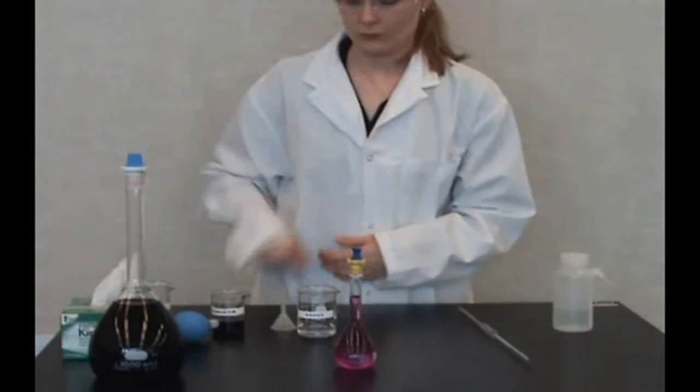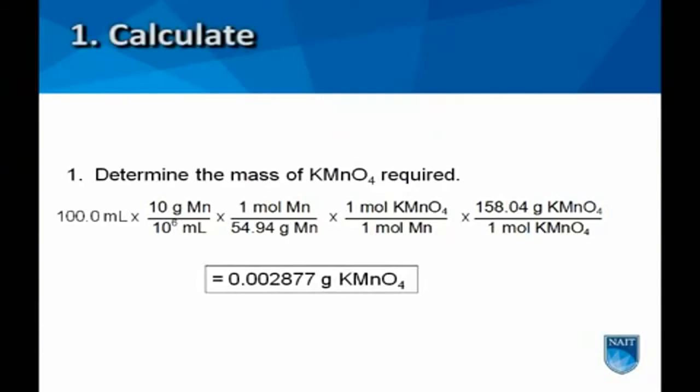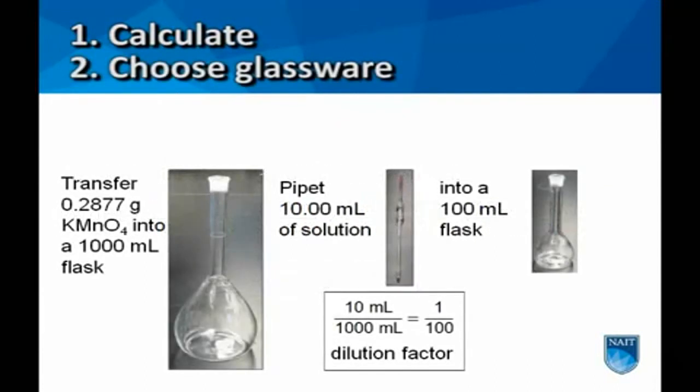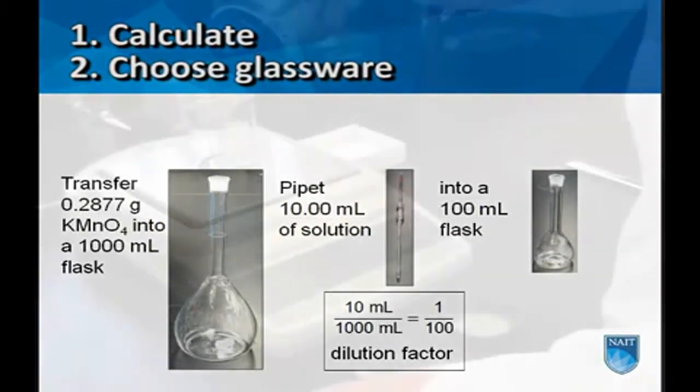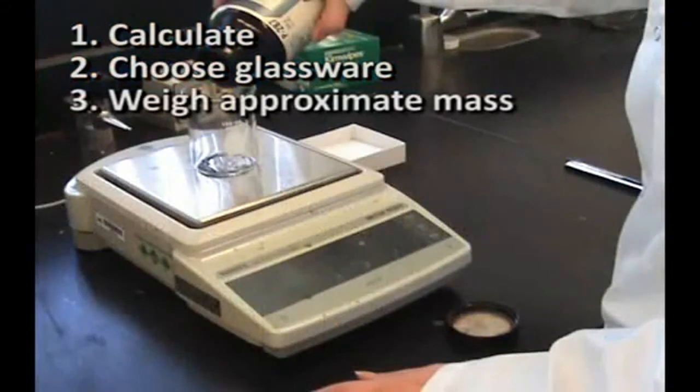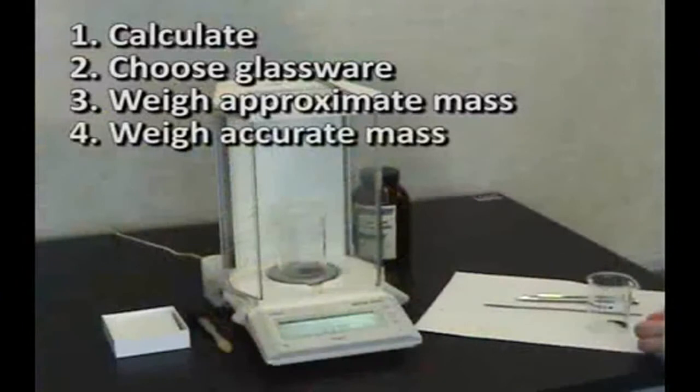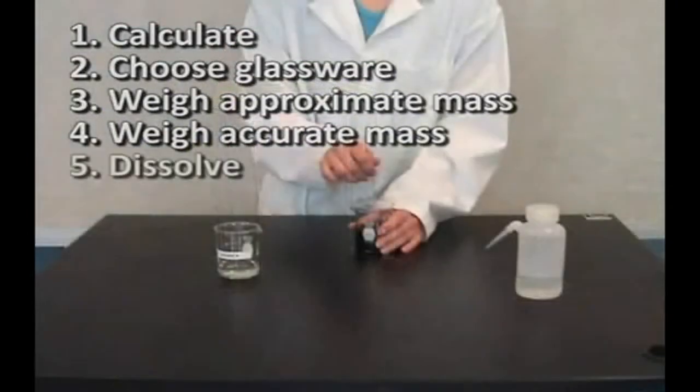Let's review the steps. Calculate the mass needed for your solution. Decide what glassware is to be used. Weigh out on top loading balance the approximate mass. Weigh accurately on analytical balance. Dissolve the potassium permanganate.